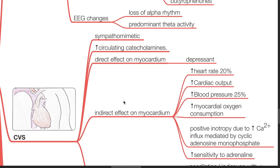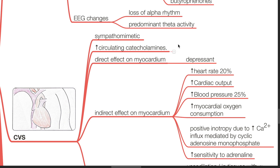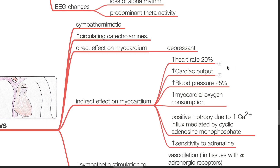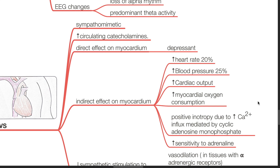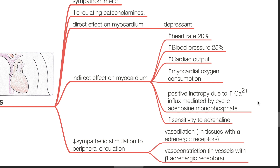Cardiovascular system. Ketamine is a sympathomimetic and increases circulating catecholamines. The direct effect on the myocardium is depression, but indirect effects include increase in heart rate by 20% and increase in blood pressure by 25%. There is increase in cardiac output and myocardial oxygen consumption. Positive inotropy is due to increased calcium influx mediated by cyclic adenosine monophosphate. There is increased sensitivity to adrenaline. Decreased sympathetic stimulation to peripheral circulation results in vasodilation in tissues with alpha-adrenergic receptors, and vasoconstriction in vessels with beta-adrenergic receptors.